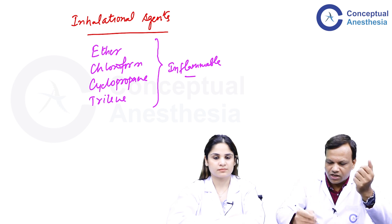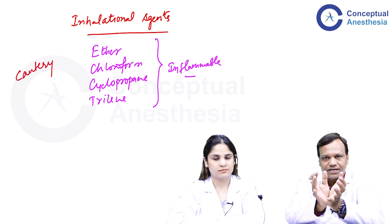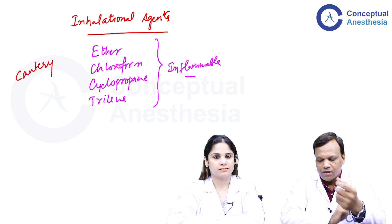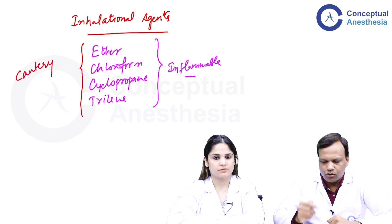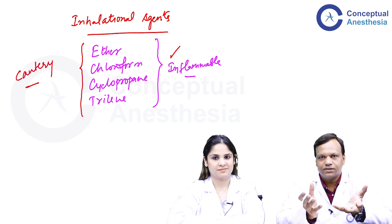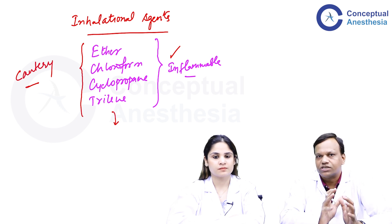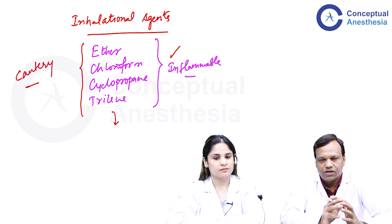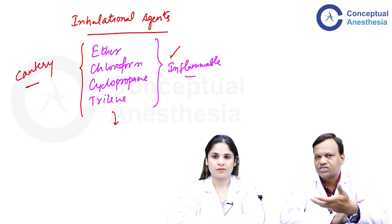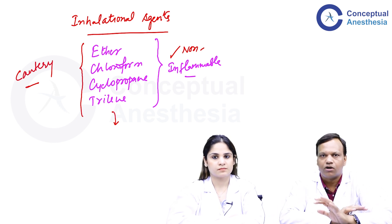Then we devised a method known as cautery — we simply apply heat at the point where bleeding is occurring, and whichever blood vessel is broken will coagulate with the heat, stopping the bleeding. The problem with those earlier agents was we could not do cautery while using them, because cautery would cause an explosion. So there was a lot of blood loss during surgery. That is why all modern inhalational anesthetic agents must be non-flammable, and all agents we use now are non-flammable.